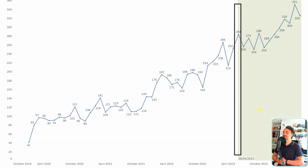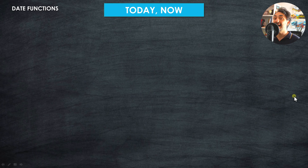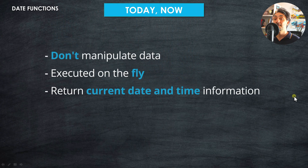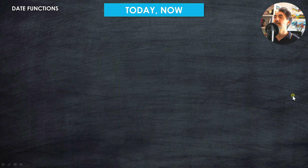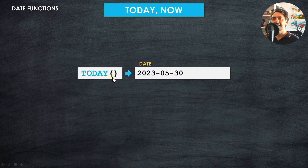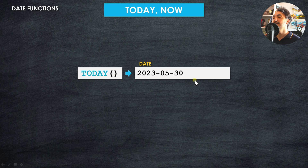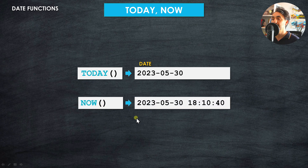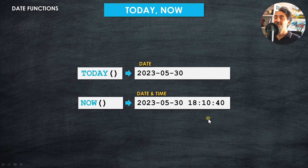We have two functions: TODAY and NOW. They are the easiest and simplest functions in Tableau — they don't manipulate or transform anything. TODAY requires no argument and returns the current date. If you also want the time information, you use NOW, which also takes no argument and returns the date and time. For example, as I'm recording this it is 6 PM, 10 minutes and 40 seconds, at the end of 2023.